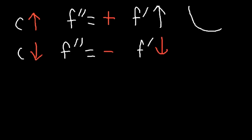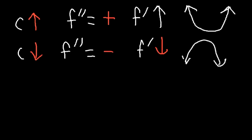When a graph curves in this direction, it's concave up — it's a shape that opens in the upward direction. If it opens downward, this is a concave down shape.